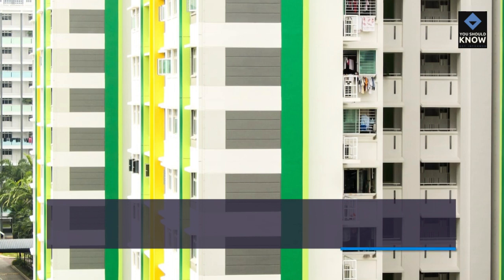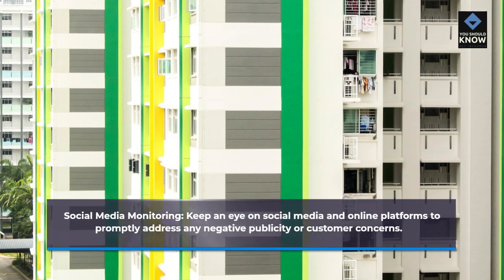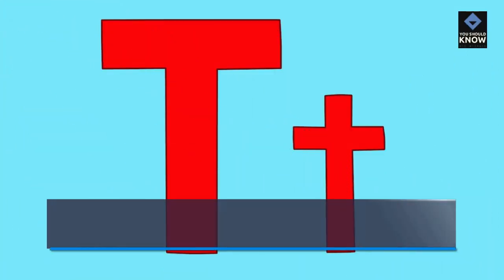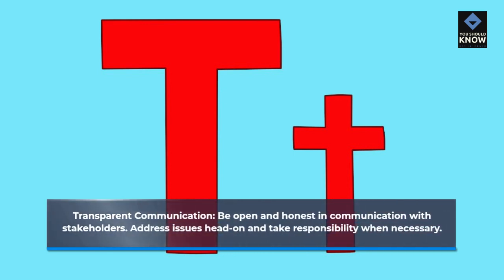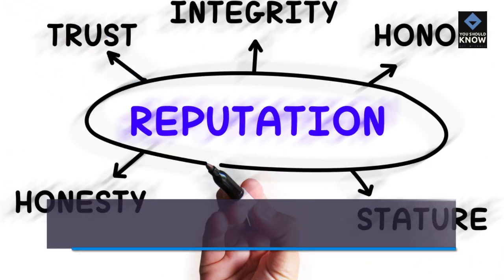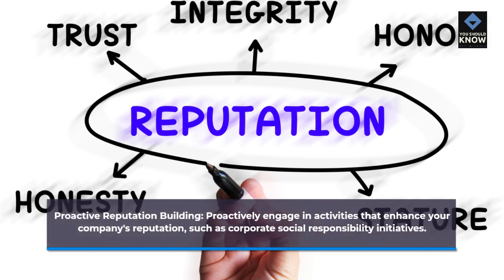Reputational risk management. Social media monitoring: keep an eye on social media and online platforms to promptly address any negative publicity or customer concerns. Transparent communication: be open and honest in communication with stakeholders; address issues head-on and take responsibility when necessary. Proactive reputation building: proactively engage in activities that enhance your company's reputation, such as corporate social responsibility initiatives.